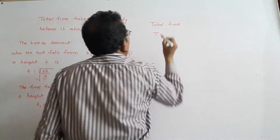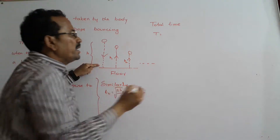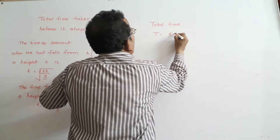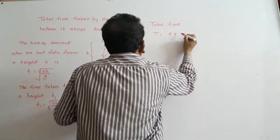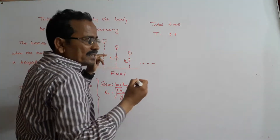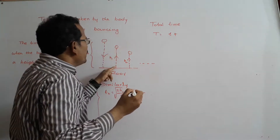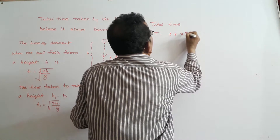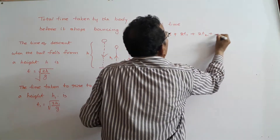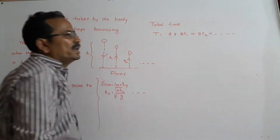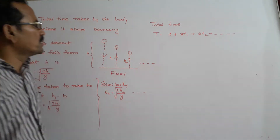T1 is equal to the square root of 2H1 by g. For the initial fall, the time is T. To ascend a height H1, time is T1. To descend the same height, time is T1 again — total time 2T1. For the next collision, total time is 2T2, and so on. This gives the total time taken by the body before it stops bouncing.